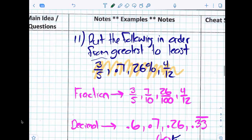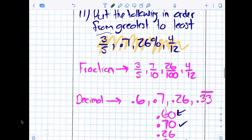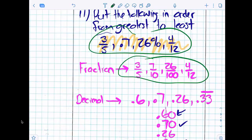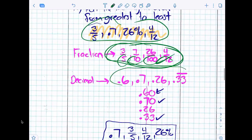How about this one? I put the following numbers in order from greatest to least. I took all these numbers here and put them in fraction form, and then we decided we didn't like that. Why didn't we like that? We still can't compare the fractions because they don't have common denominators. So we converted them all to decimals, and then what did we do? Stack them.